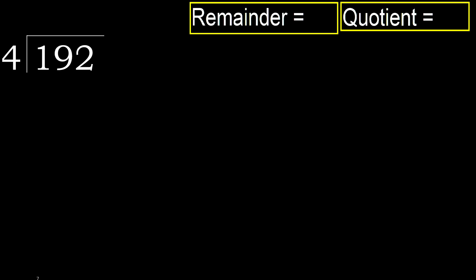192 divided by 4. 1 is less, therefore next — 19 is not less.